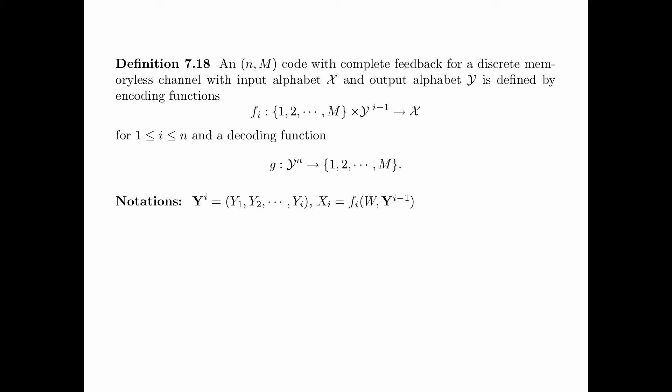We are going to adopt the following notations. We use Y^i to denote the sequence Y_1, Y_2 up to Y_i, and X_i to denote f_i of W and Y^(i-1). Here, X_i is the symbol to be transmitted through the channel at time i. The function f_i is the encoding function for the i-th transmission, which depends on W, the message to be transmitted, and Y^(i-1), the first i-1 symbols received by the channel. Because of this, this code uses complete feedback.